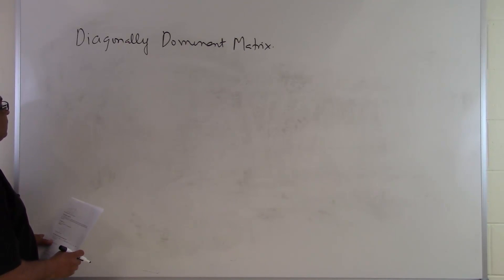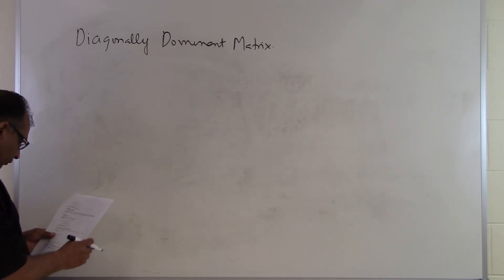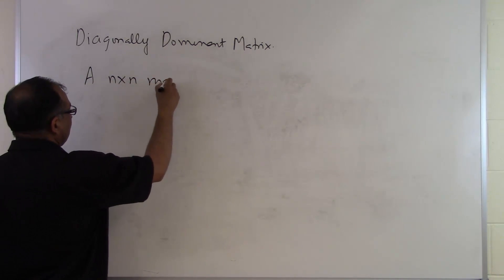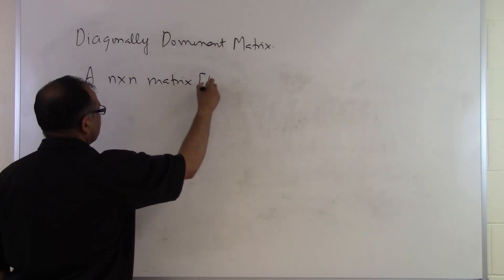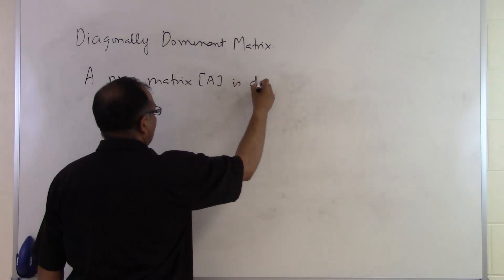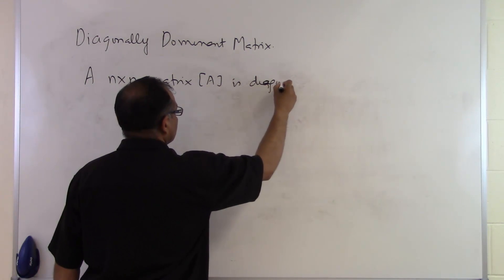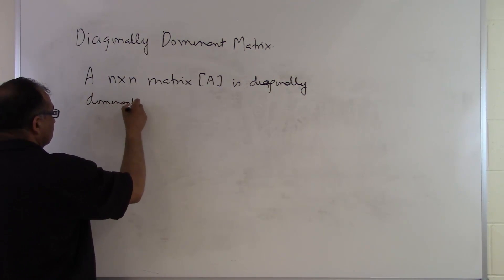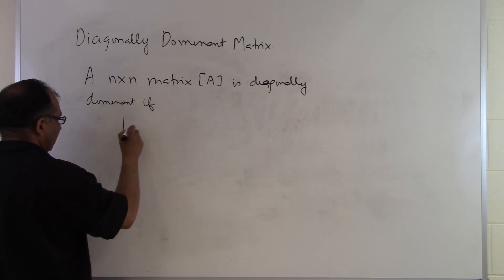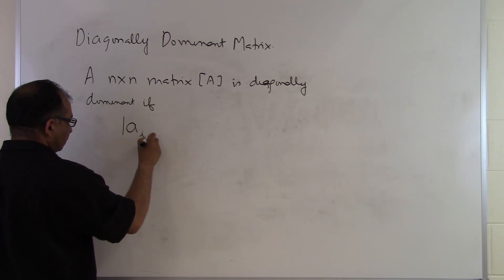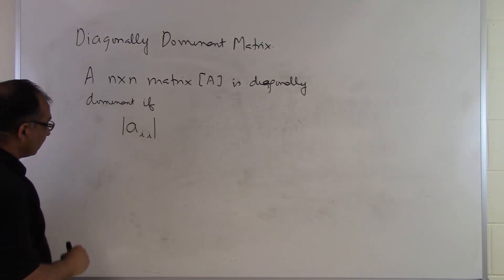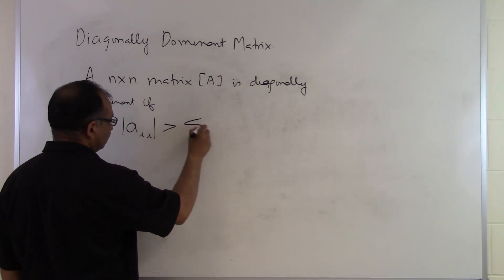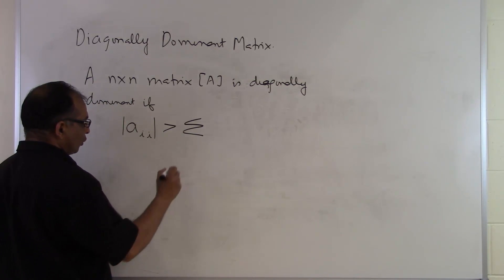In this case we will look at what is a diagonally dominant matrix. An n by n square matrix A is diagonally dominant when each of the elements on the diagonal has an absolute value greater than the sum of the absolute values of the rest of the elements in that row.